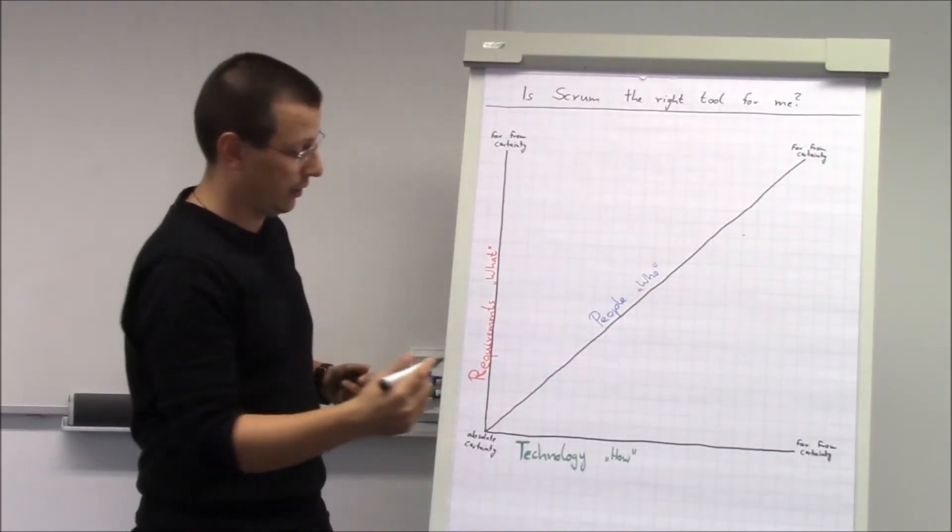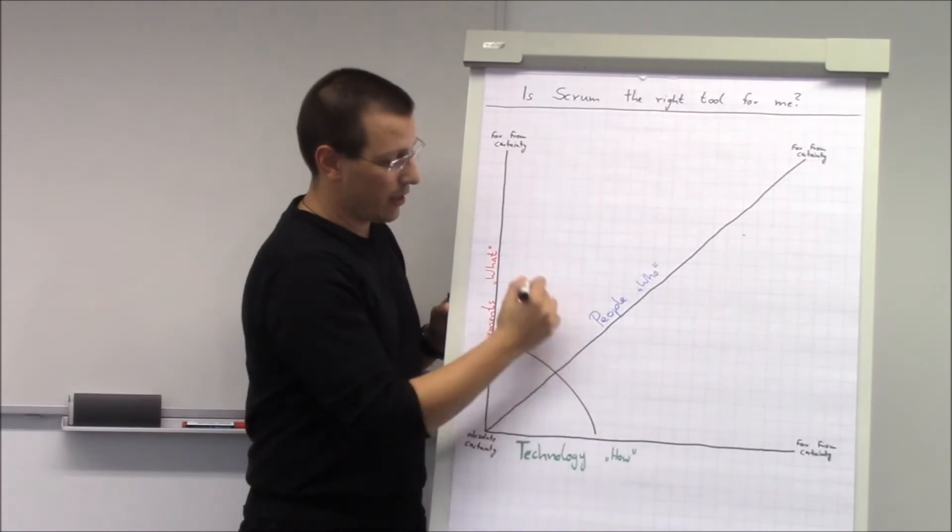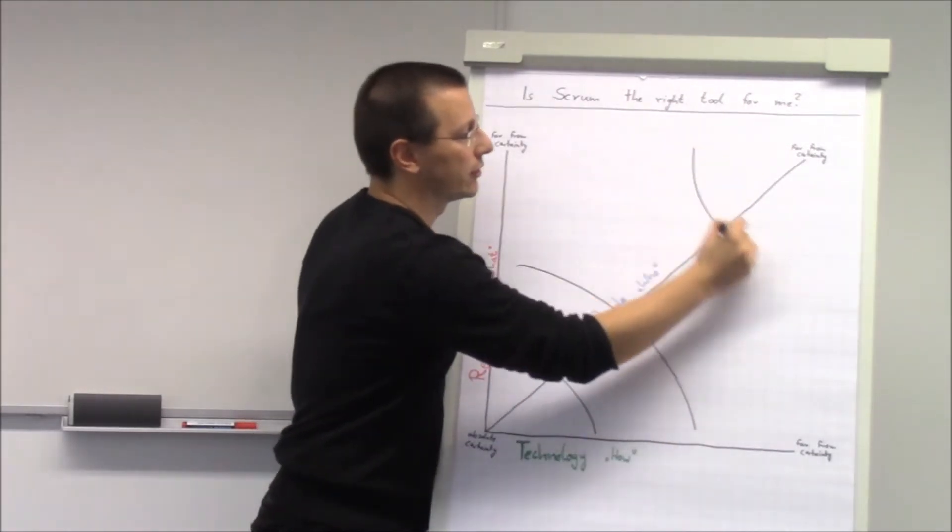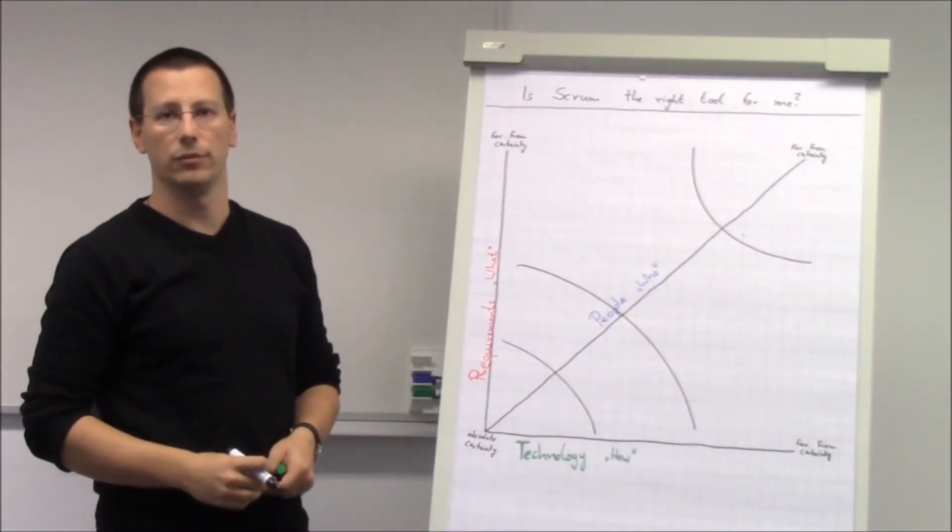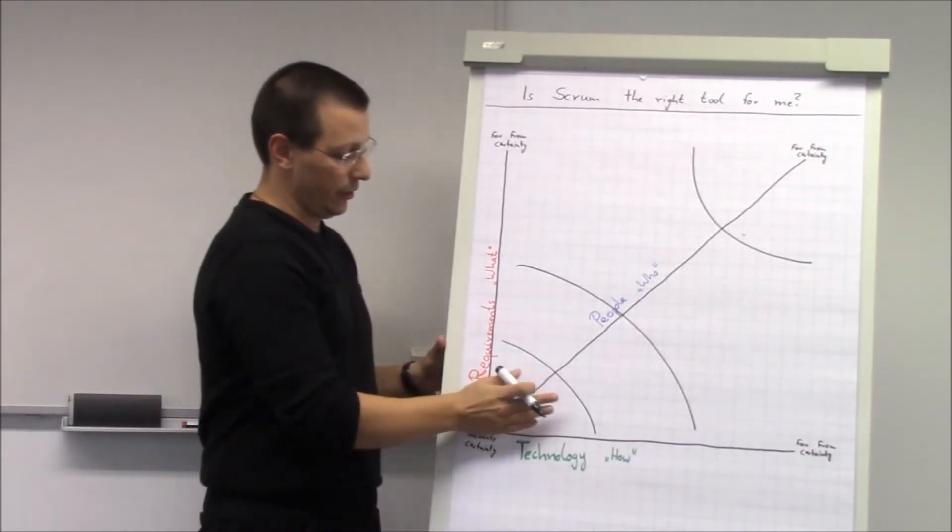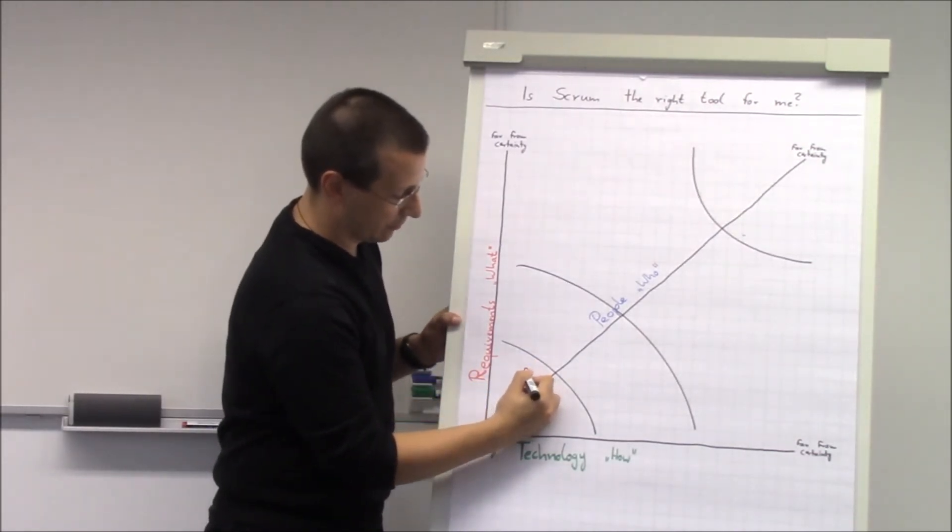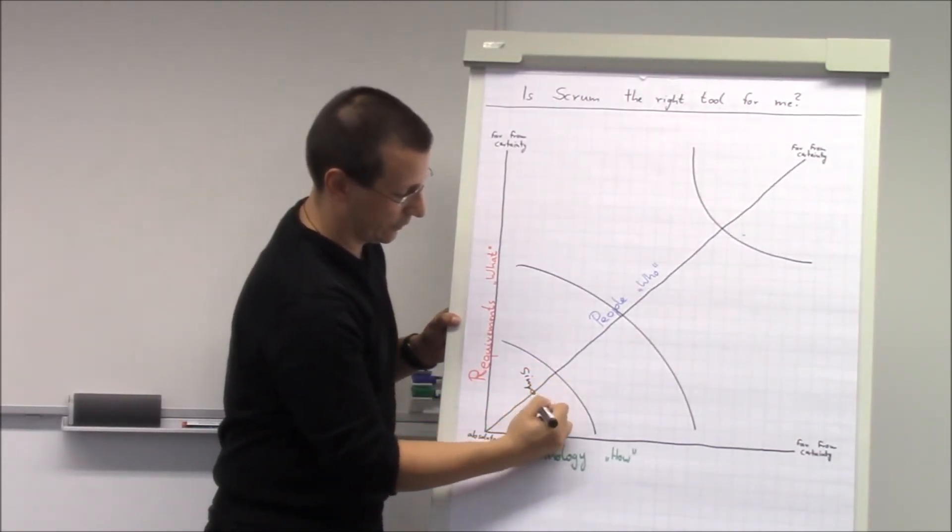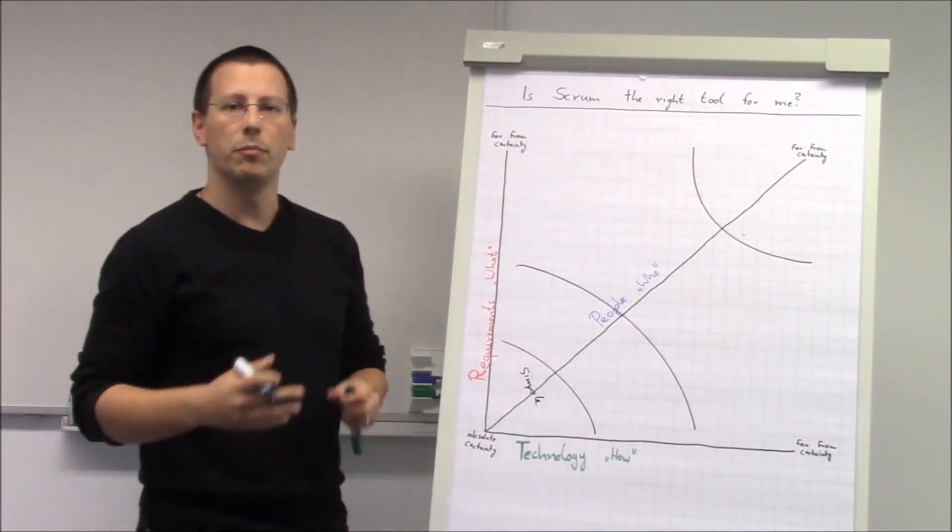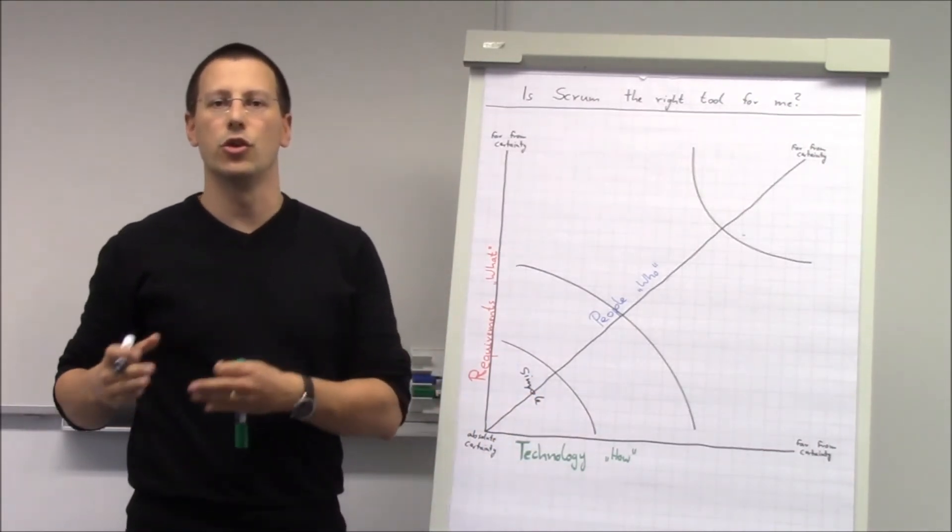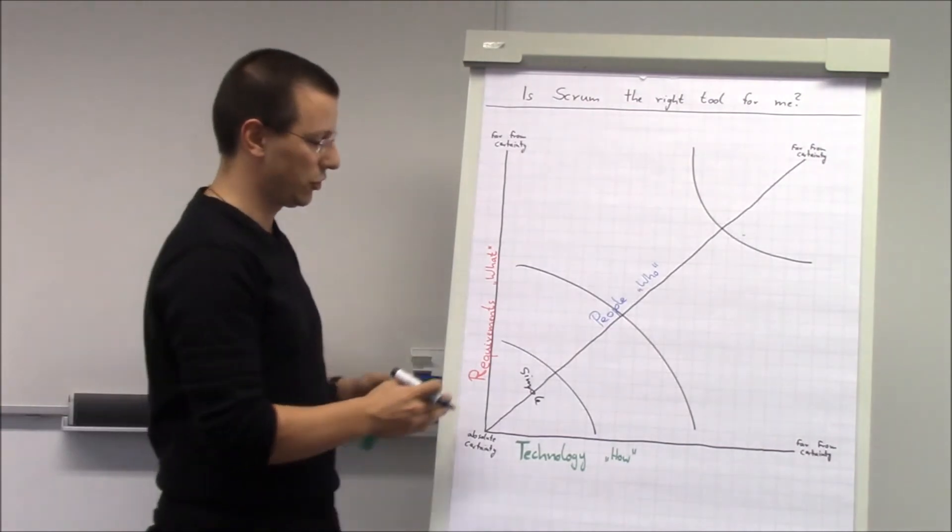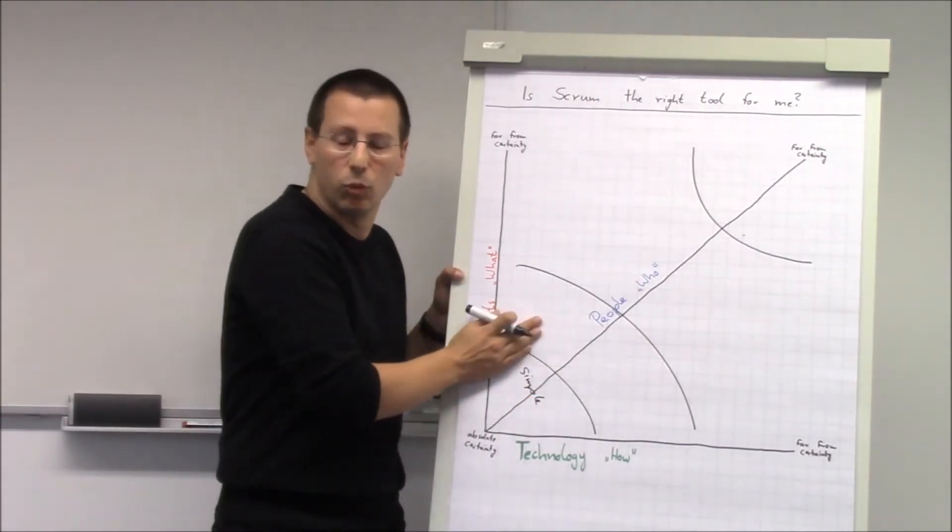The model continues. There are four quadrants in that model. The first one is called simple. It's defined as basically everything is normal. So you know what has to be built, you know who builds it.